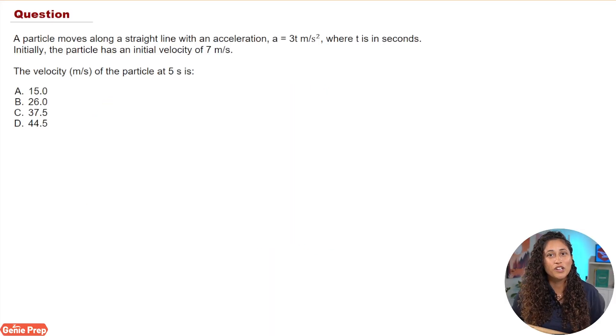A particle moves along a straight line with an acceleration of 3t meters per second squared, where t is in seconds. Initially the particle has an initial velocity of 7 meters per second, and we want to find the velocity of the particle at 5 seconds. To solve this problem, the first thing you need to do is go to the reference manual and grab the equation.